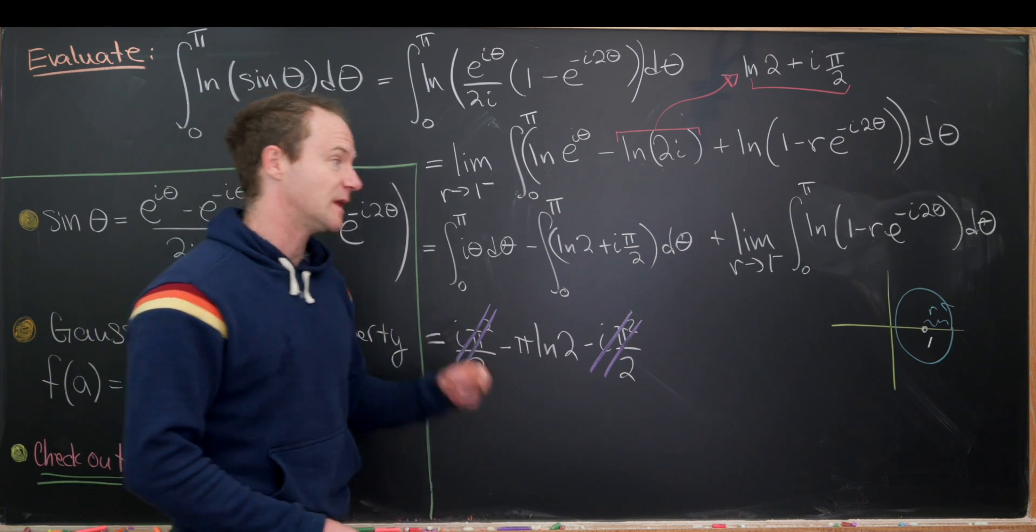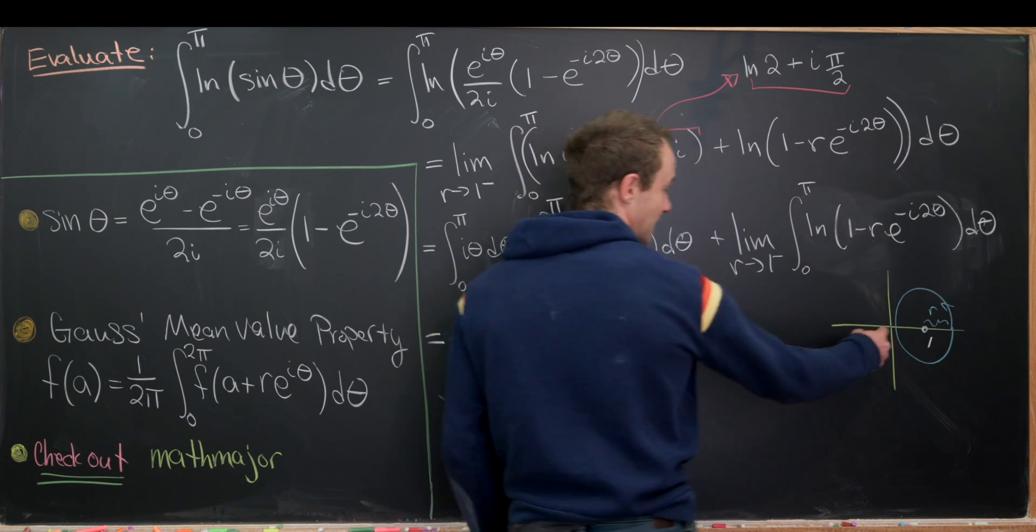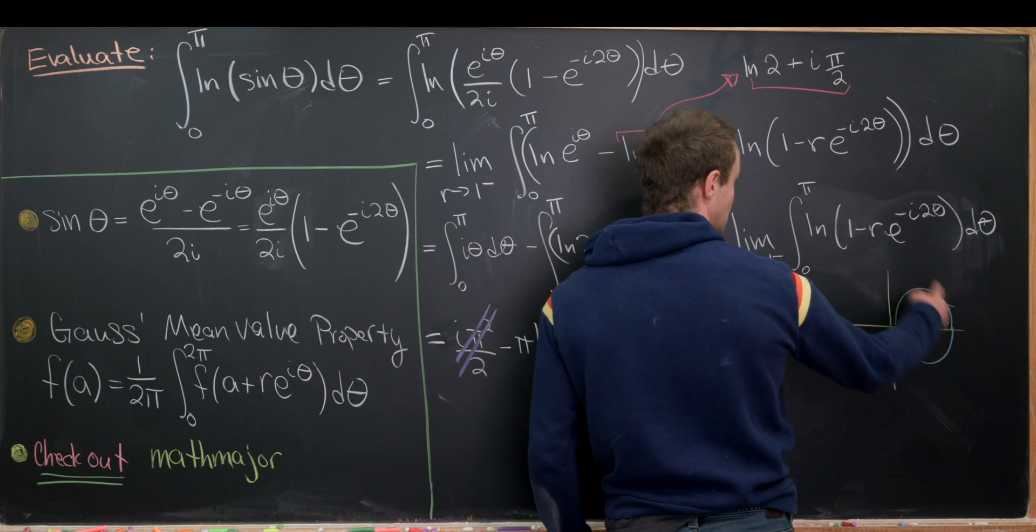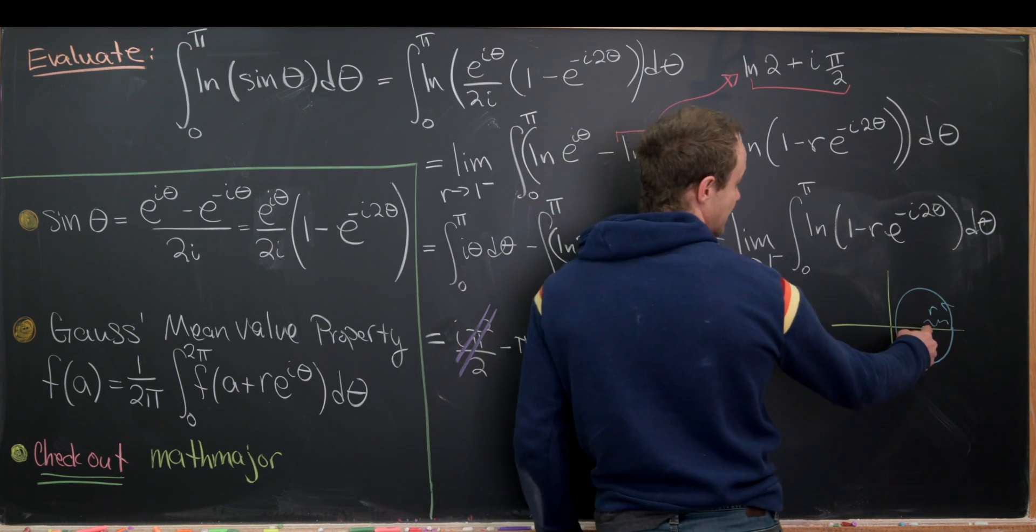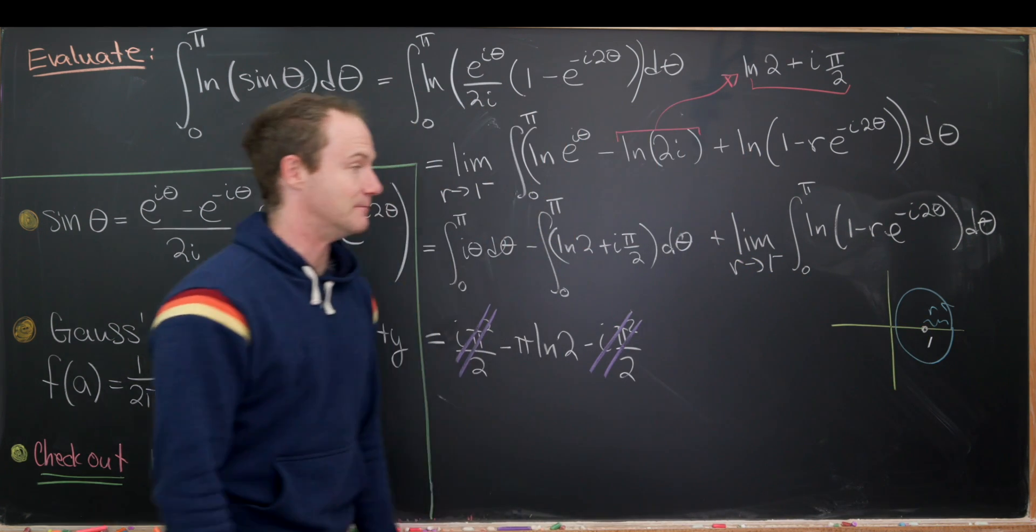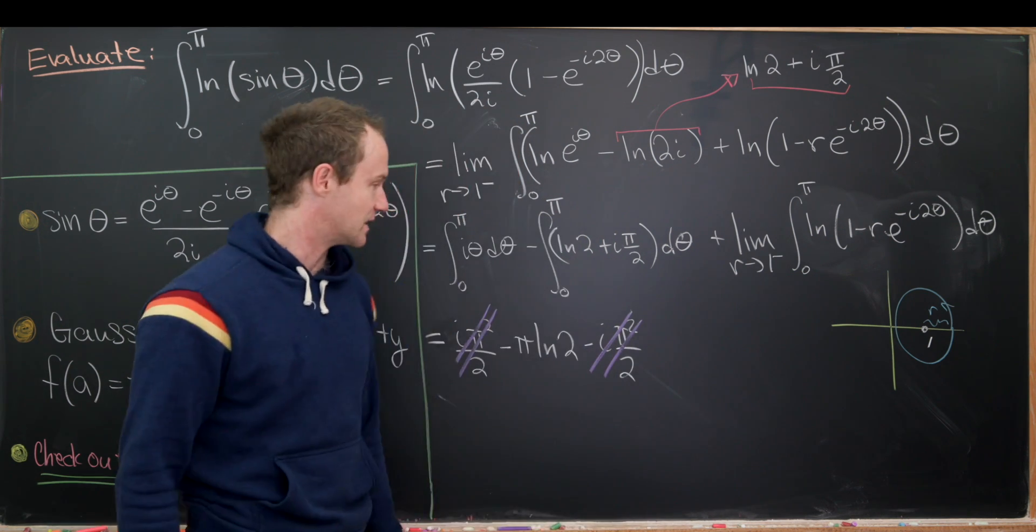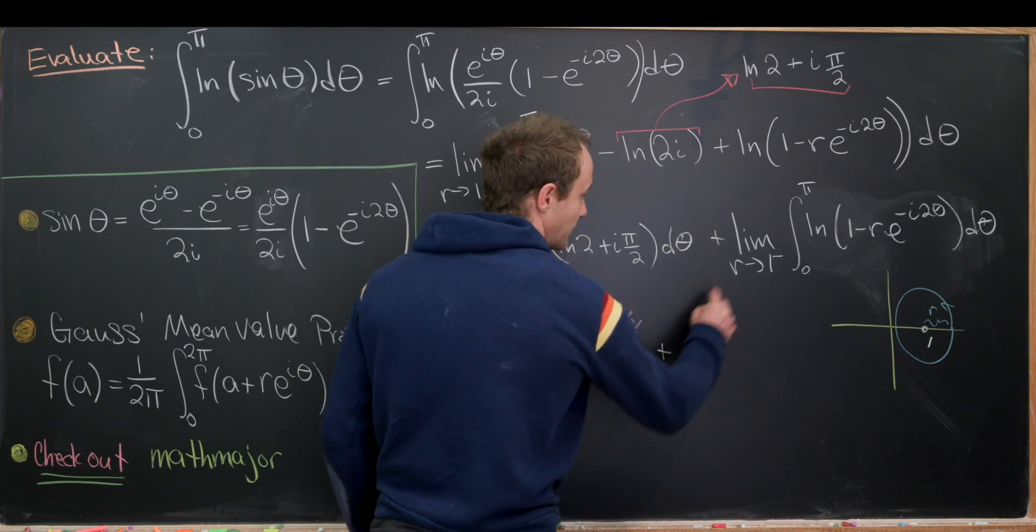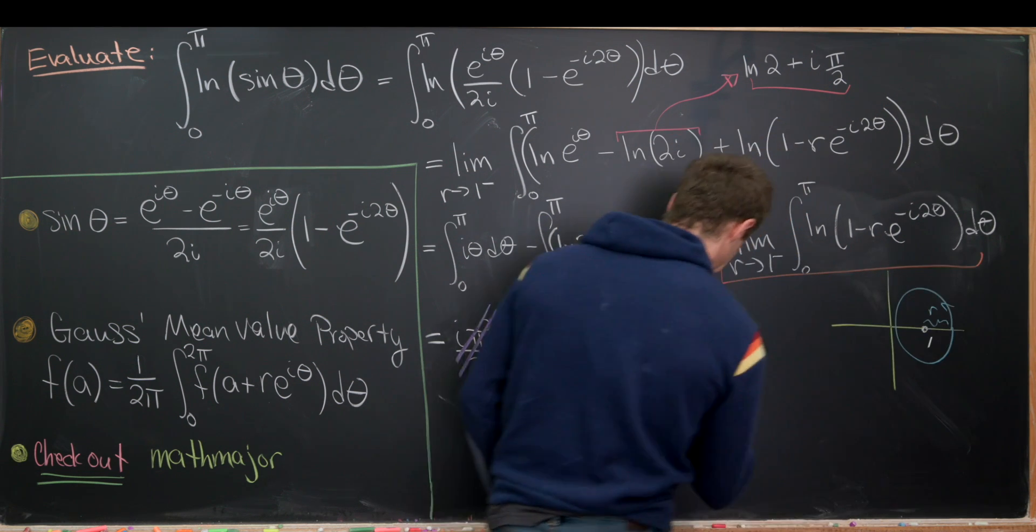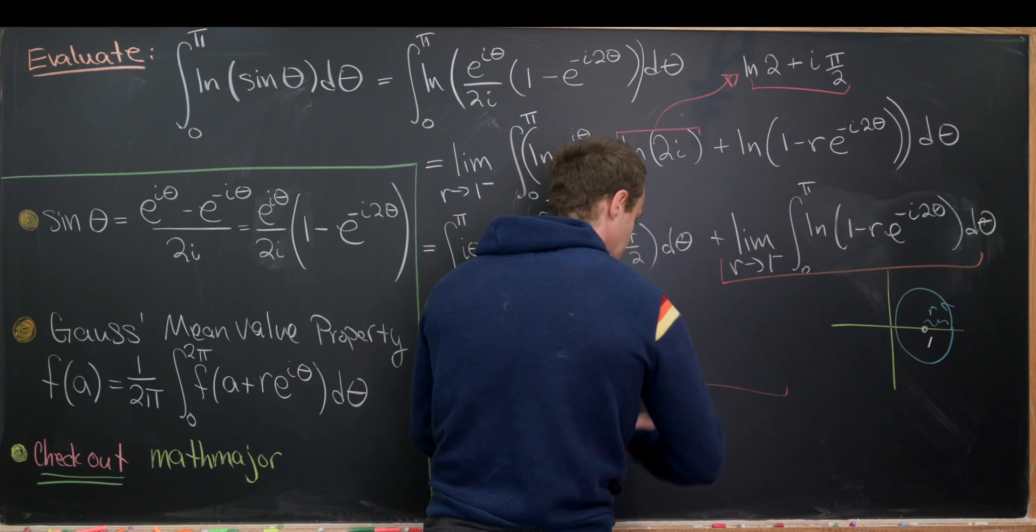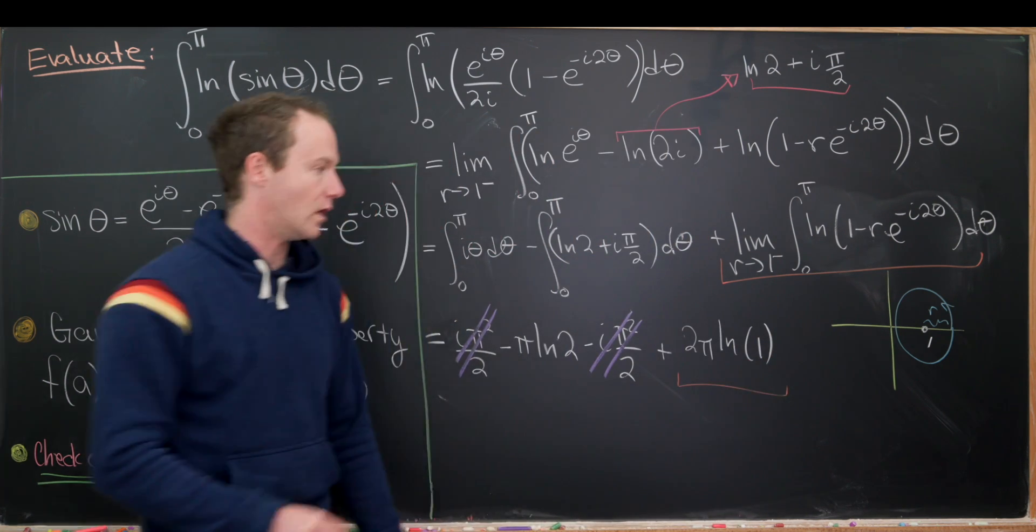Okay, so anyway, now we can apply this Gauss mean value property that says that the integral around the circle of such an object is equal to the value of that object at the middle. Or that's not exactly true. It's 2 pi times the value at the middle. So that means we can replace this integral right here. So let's maybe underline that with 2 pi times the natural log evaluated at 1.